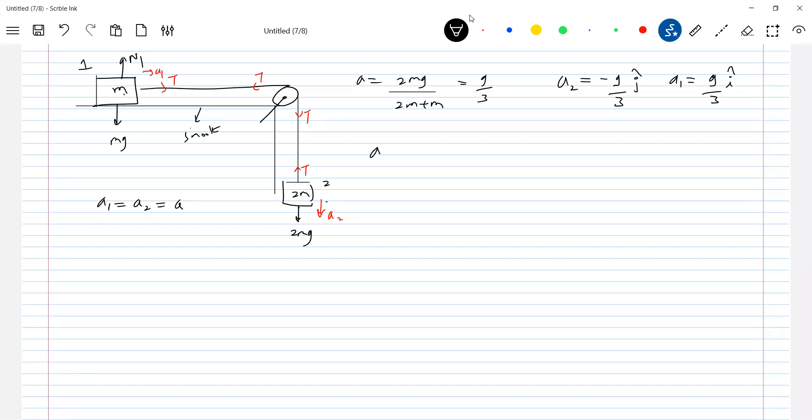What is acceleration of center of mass? Let me proceed like this. This is m a1 bar plus 2m a2 bar by m plus 2m. A1 is g by 3 i cap minus 2m g j cap by 3m.